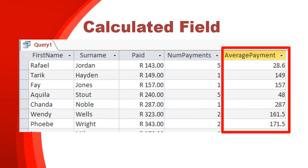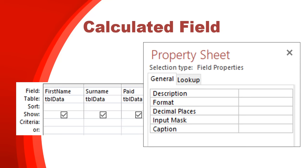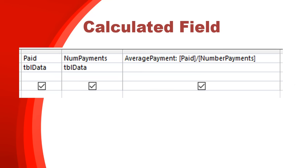One thing to note: if you're dividing a currency field by a number, technically the result should also be displayed as currency. To fix the formatting, go back to your query design, right-click on the calculated field column, go to Properties, and change the format to currency or decimal — whichever you prefer.